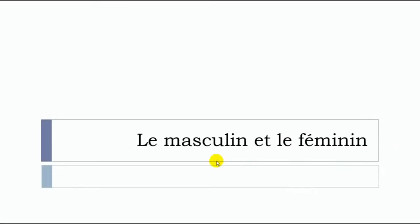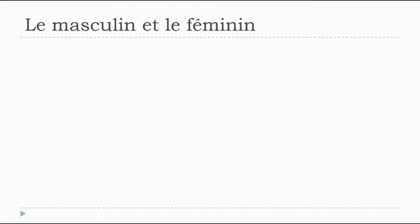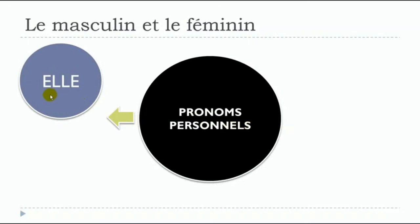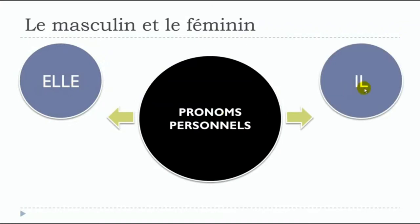The masculine and the feminine: in French grammar, we have the difference between the masculine form and the feminine form, and it will affect the language quite deeply. For example, when it comes to les pronoms personnels, we'll have the difference between masculine and feminine. Starting with the feminine — ladies first — it's elle, meaning she, the feminine singular form. For the masculine it's il, meaning he, the masculine singular form.